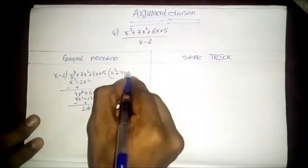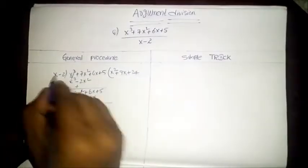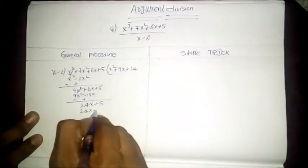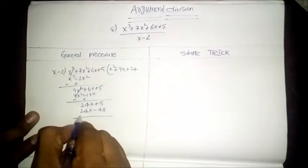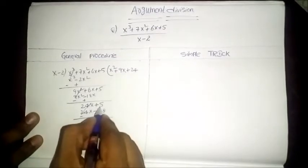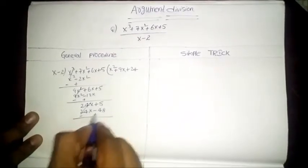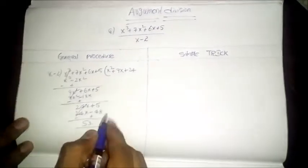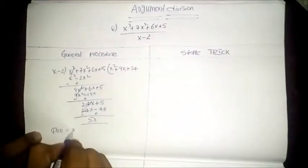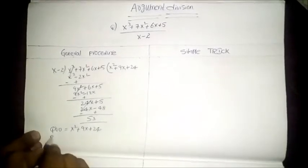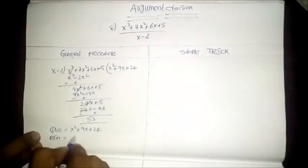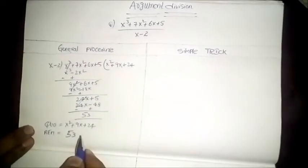Here, 24 into minus 2 gives minus 48. With the opposite signs, minus 24x and plus 24x get cancelled, leaving 5 plus 48 equals 53. Hence the quotient is equal to x squared plus 9x plus 24, and the remainder is equal to 53. It is a very long, lengthy process.